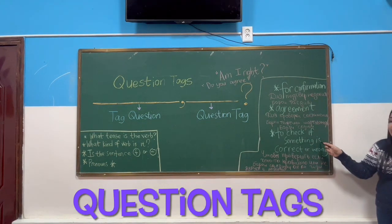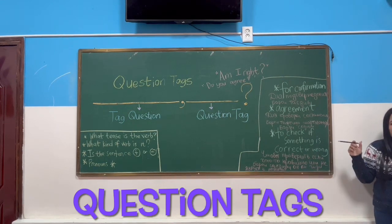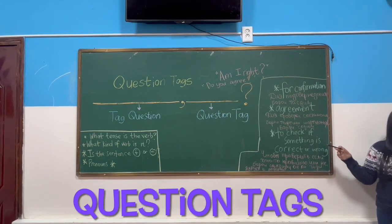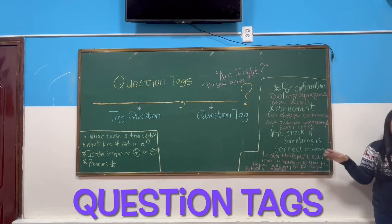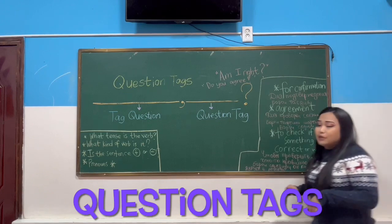We also use Question Tags to check if something is correct or wrong — to check whether Hannah is correct or Hannah is wrong. Am I correct or am I wrong? Is he correct or is he wrong? In Russian, we check whether the information is true or not.